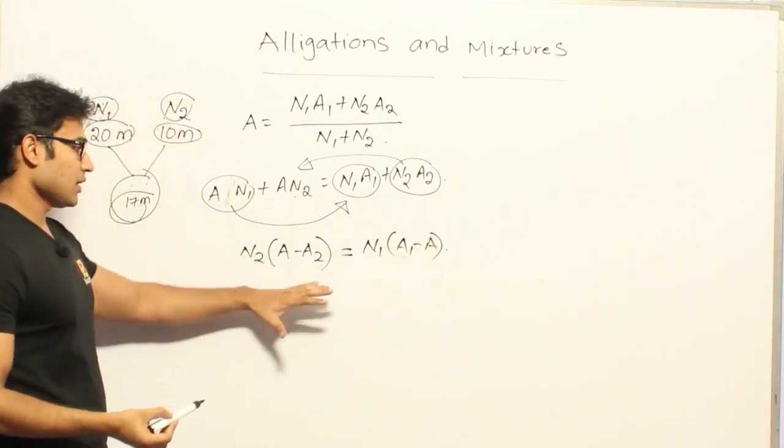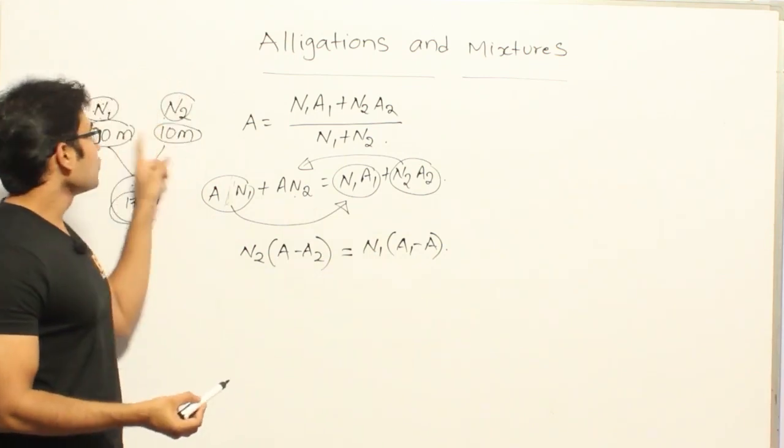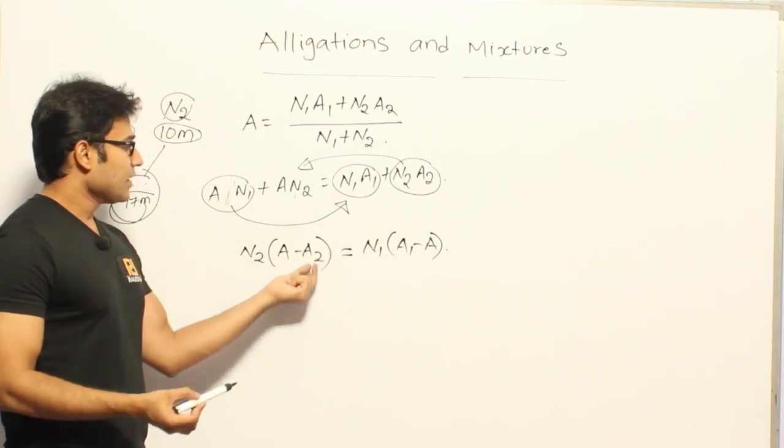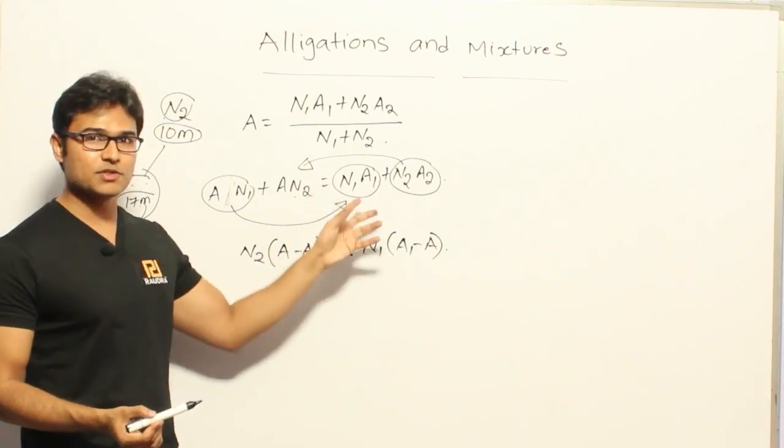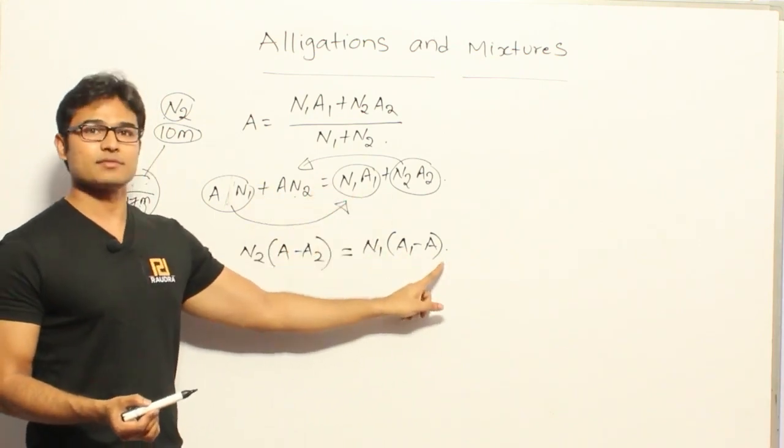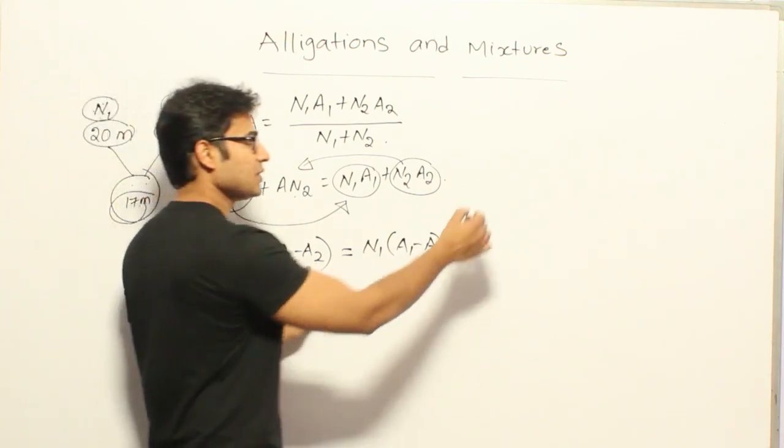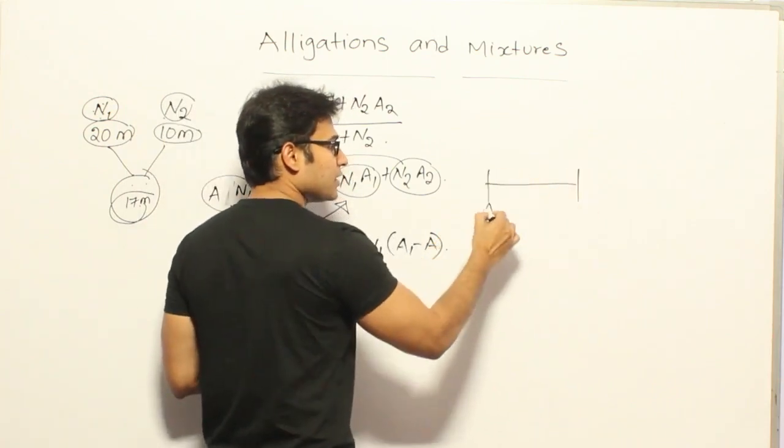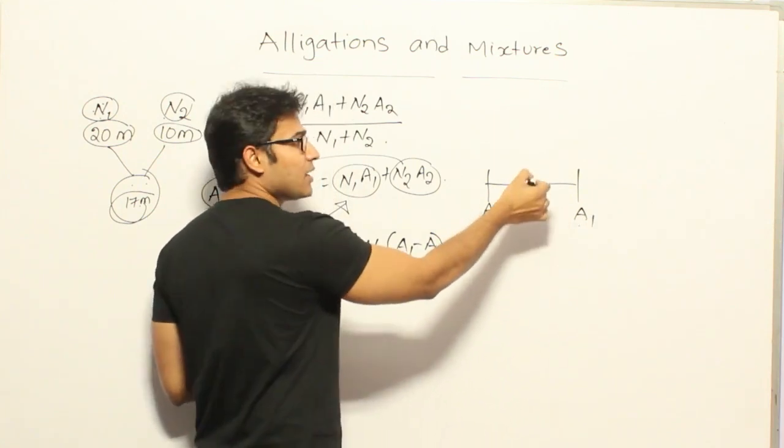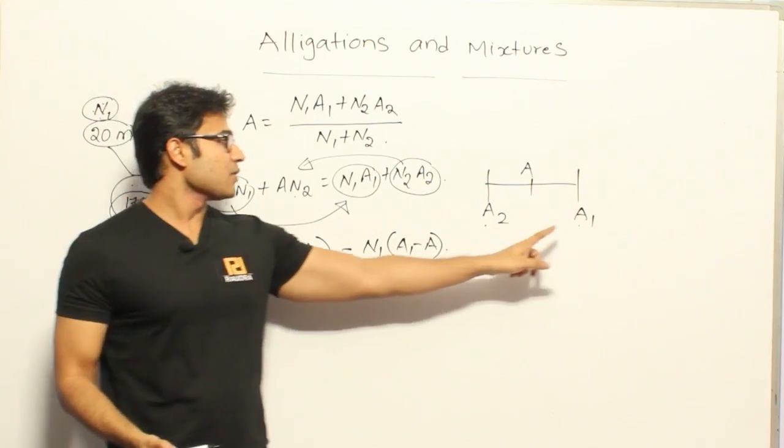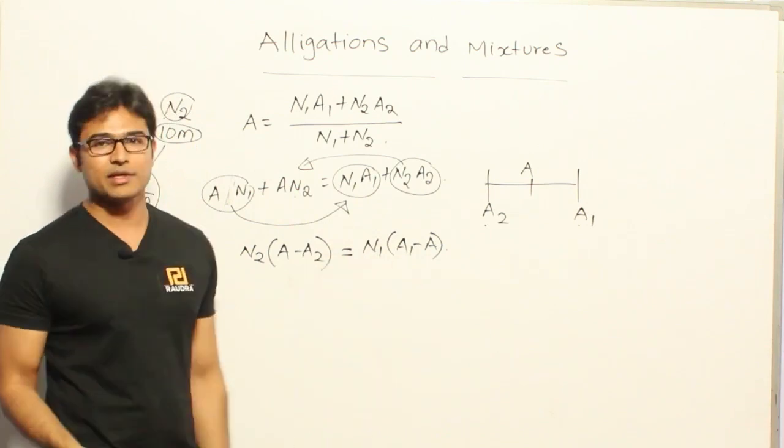And also, just to follow the convention, always assume that out of these two groups, A1 is having the higher average compared to A2. That is why I have shifted the terms in such a way that I have written A1 minus A so that it is a positive number, and A minus A2, it is a positive number. If you assume that A2 is here in the number line, A1 will be here, which means A1 is greater than A2, and A is going to be here. I have written A1 minus A, which is positive value, and A minus A2, which is positive value.